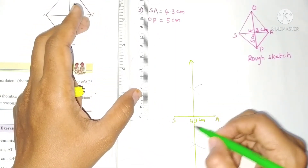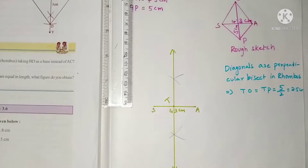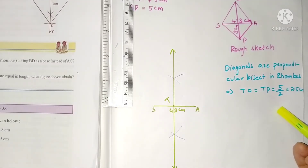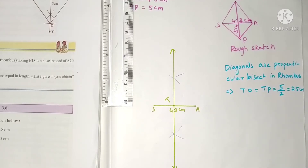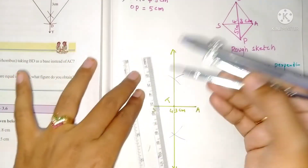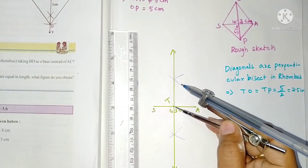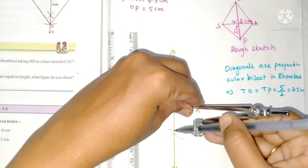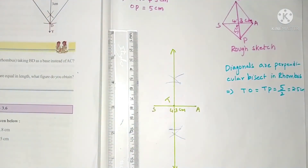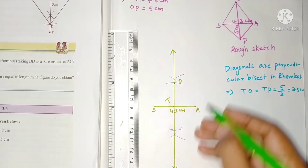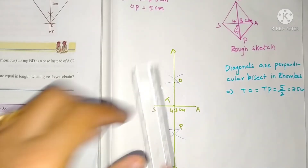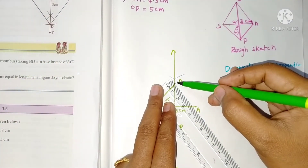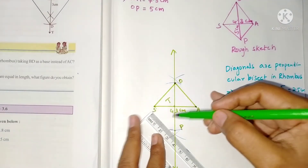This is the perpendicular bisector of SA. The intersecting point, take it as T. Since diagonals are perpendicular bisectors in a rhombus, TO and TP is half of 5, which is 2.5 centimeters. Take the compass with 2.5 centimeters radius and from T draw arcs with the same radius on both sides. The intersecting points are O and P.